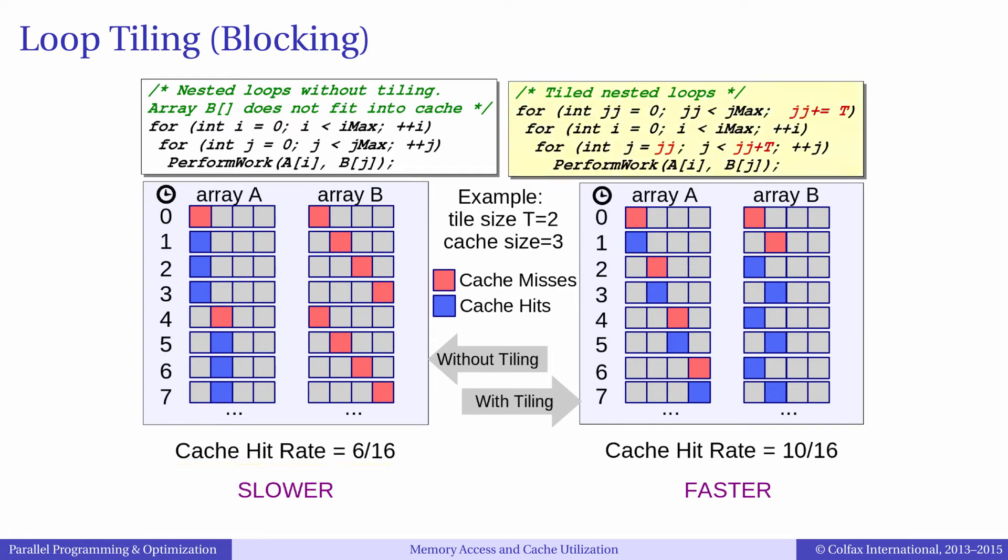We can improve the cache hit ratio if we reorder the memory accesses. This can be done by strip mining the loop in j and permuting the other two loops. With this new algorithm, we can see what happens with the cache. A[0] and B[0] both have a miss. A[0] is a hit, but B[1] is a miss. So far, things are going just like in the first algorithm.